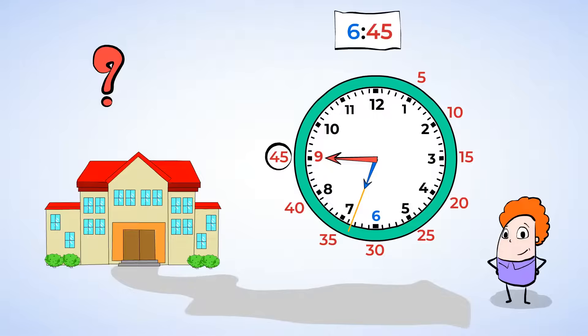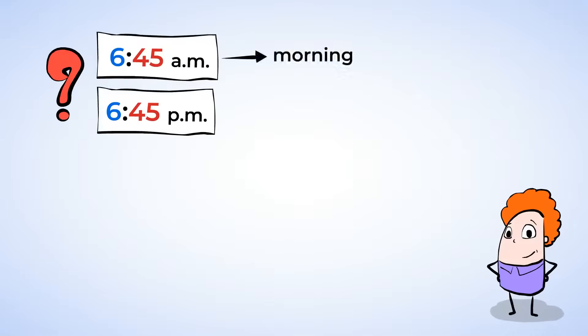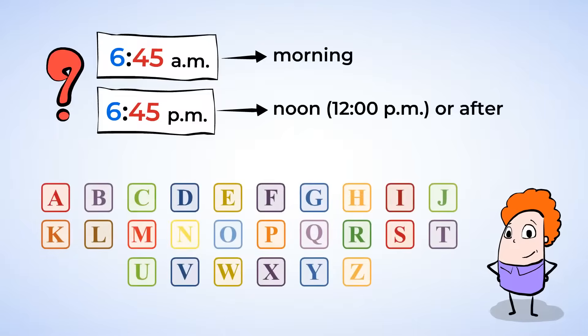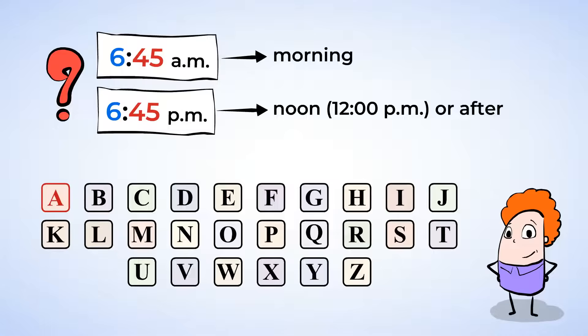Oh, but does Eric get up at 6:45 a.m. or 6:45 p.m.? Oh, a.m. and p.m. help us to identify the section of the day. A.m. is for the morning and p.m. is noon or 12 p.m. and everything after. Now, here's a way to help you remember. A comes before p, and therefore a.m. comes before p.m. So does Eric get up for school at 6:45 a.m. or 6:45 p.m.? Well, he gets up for school in the morning, so we know that Eric gets up for school at 6:45 a.m. Great work.